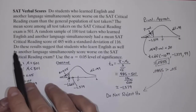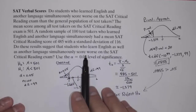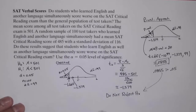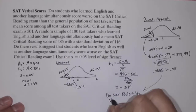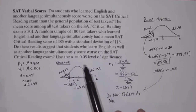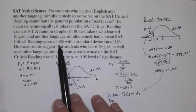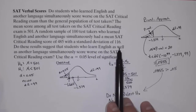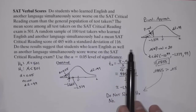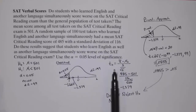So, do these results suggest that students who learn English as well as another language simultaneously score worse on the SAT Critical Reading Exam? The answer is no. At the 0.05 level of significance, it does not appear that these students score worse. The fact that the sample mean was 485 is not statistically significant. As far as we can tell, students who learn English as well as another language simultaneously do just as well as the general population of test takers.